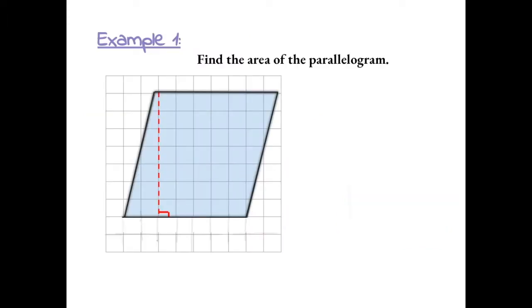Example 1, find the area of the parallelogram. To find the area of a parallelogram, we have to find the product of its base and its height. The base could be any side of the parallelogram. I'm going to use the bottom, which is 1, 2, 3, 4, 5, 6, 7 units. So the base has size 7 units, and the height has to be perpendicular from the base to its opposite side, which is this red line here.